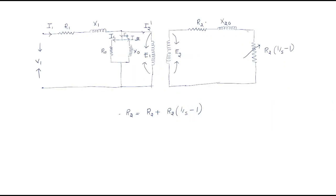We modified r2 with two resistances: r2 and r2 times (1/s minus 1). We can divide this equivalent circuit to understand how power is divided. The input power is applied, and input power equals voltage times current times power factor — that is, root 3 times line voltage times line current times power factor.